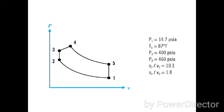This last question on test two was a dual cycle for an internal combustion engine. The tricky part about this question was a pressure increase from state three to state four, which we haven't seen before on any of our other problems. We're given the initial pressure and initial temperature, then the two different pressures p3 and p4, the compression ratio, and the cutoff ratio v4 over v3 is 1.8.